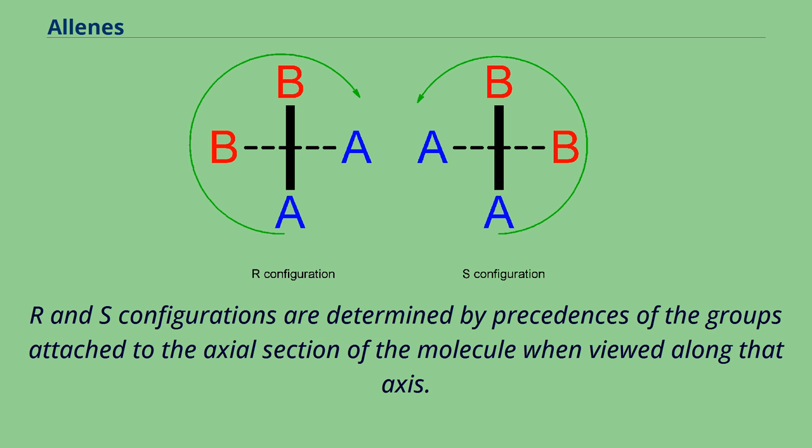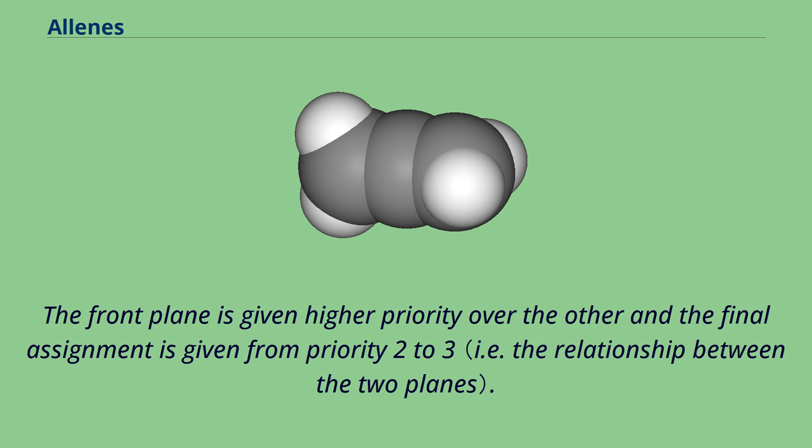R and S configurations are determined by precedences of the groups attached to the axial section of the molecule when viewed along that axis. The front plane is given higher priority over the other and then the final assignment is given from priority 2 to 3.